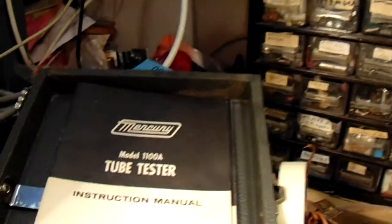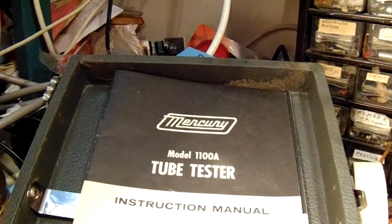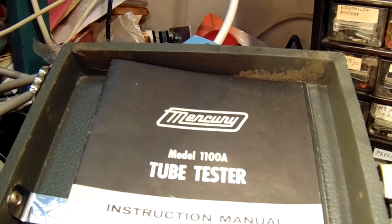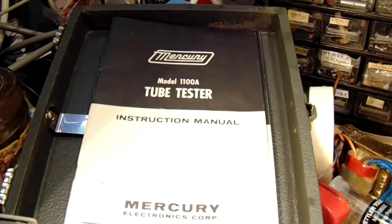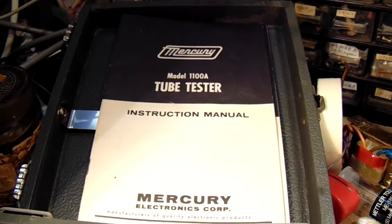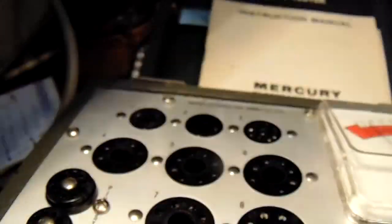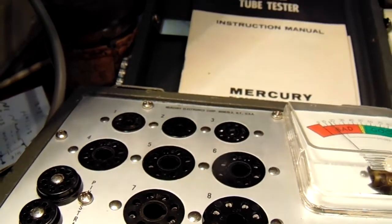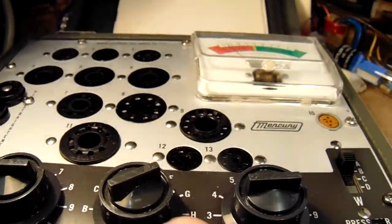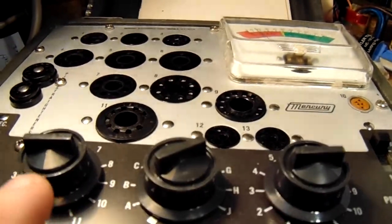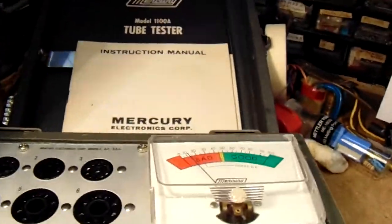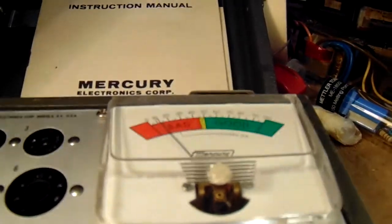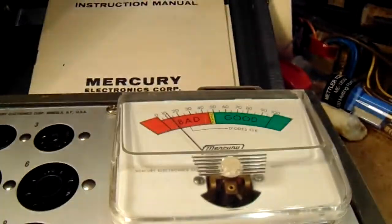Here is that tube tester. I think it's from the 1960s approximately. You could test tubes by sticking them in with their pins into that socket, and then with a certain position from all these switches, you could see on the meter here whether the tube was good or bad.